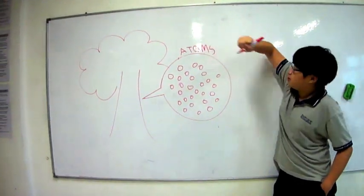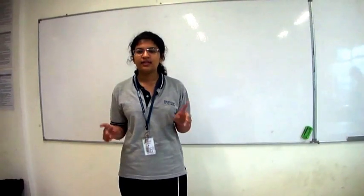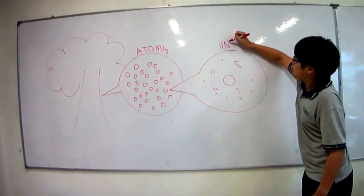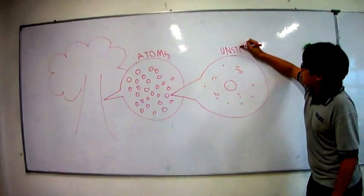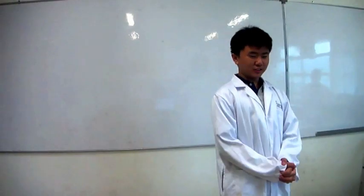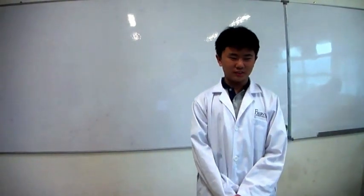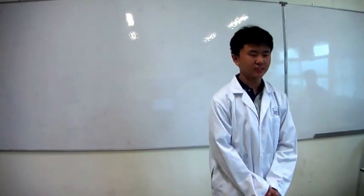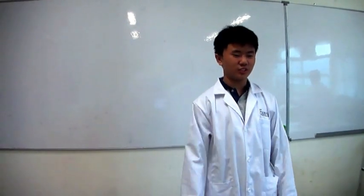However, occasionally an atom may become unstable. When this occurs, the atom will emit energy or particles called ionizing or nuclear radiation in an effort to become more stable. Hence, radiation is energy or particles emitted from unstable atoms, and radioactive material is any material that emits radiation as it decays.